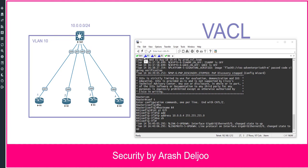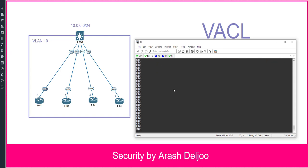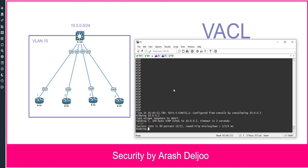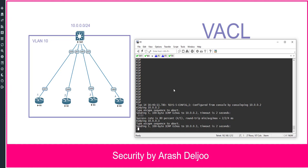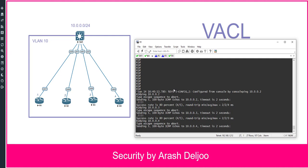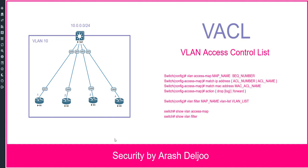Now we don't have any VACL, so we expect connectivity between R1, R2, R3, and R4. Let me verify from R1: ping 10.0.0.2 — we have connectivity. Ping 10.0.0.3 — connectivity. Ping 10.0.0.4 — connectivity. This is the first step, and now we can define our policies.